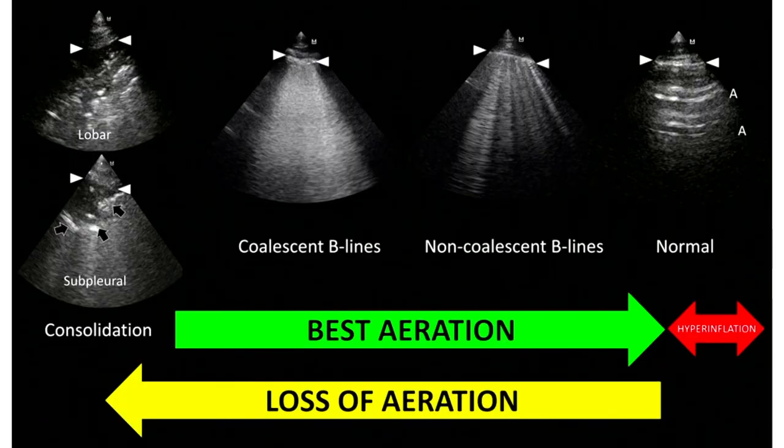Certain alveoli are underventilated, certain alveoli are hyperventilated. Ultrasound can definitely see underventilated, collapsed, or de-aerated areas of lungs, but it really cannot catch hyperinflated areas of lungs. So a pattern showing apparent re-aeration with a progressive fall in PF ratios can actually suggest that over-distension is occurring, not true re-aeration.